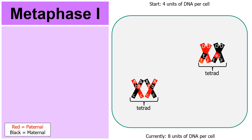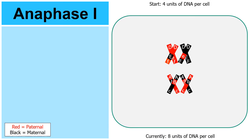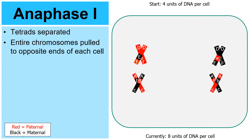In metaphase I, the tetrads align along the equator of the cell — spindle fibers pull them to the middle line. In anaphase I, the tetrads are separated. Spindle fibers pull the chromosomes of each tetrad apart, so a couple of chromosomes go to the left and the others go to the right. Entire chromosomes are pulled to opposite ends of the cell.